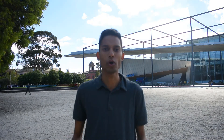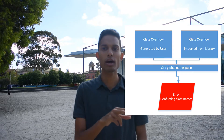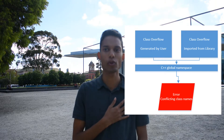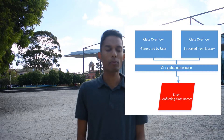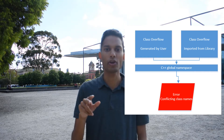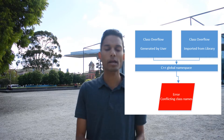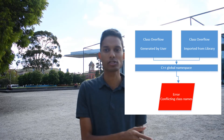Going back to namespaces — let's say for example that we have two classes and they both have the same name. In this example, they're both called 'overflow'. We have two classes with the same name and we try to compile them at the same time. The problem is that the compiler isn't going to know which class to use.